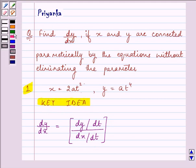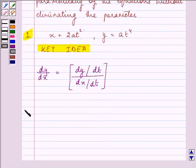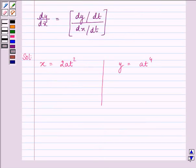According to this formula, we know that first we need to differentiate y with respect to t and then x with respect to t, and then divide the answers to get dy/dx. Here, x = 2at² and y = at⁴.